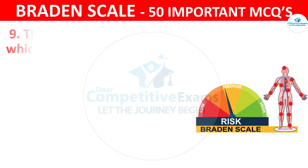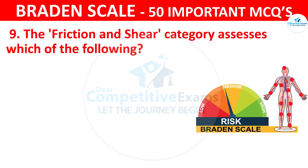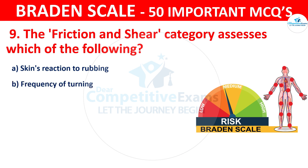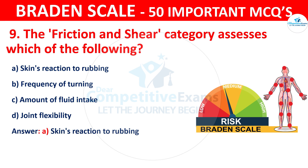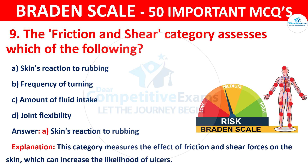Question number nine: The friction and shear category assesses which of the following? The options are skin's reaction to rubbing, frequency of turning, amount of fluid intake, or joint flexibility. The correct answer is A — skin's reaction to rubbing. This category measures the effect of friction and shear pressure forces on the skin, which can increase the likelihood of ulcers.